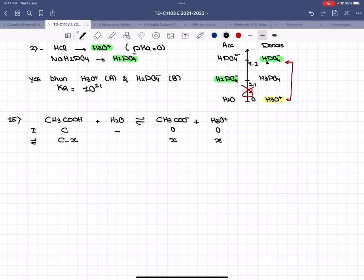What is x in terms of alpha? x is equal to alpha times C, where C is the initial concentration of your acid. So in terms of alpha, this is C minus alpha C, this is alpha C, alpha C. You can take C common: 1 minus alpha, alpha C, alpha C.